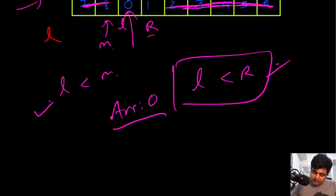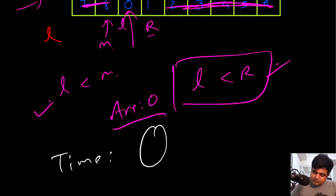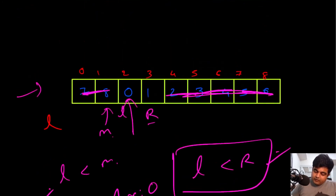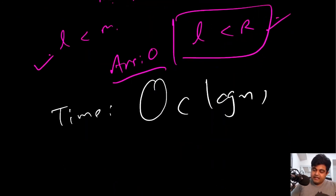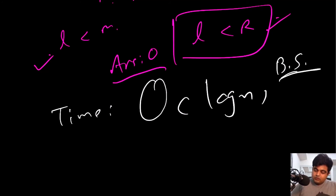The time complexity is O(log n) because during any single iteration we remove half of the candidates we were searching for — that is exactly why we use binary search to solve this problem. Now let's move on to the coding.